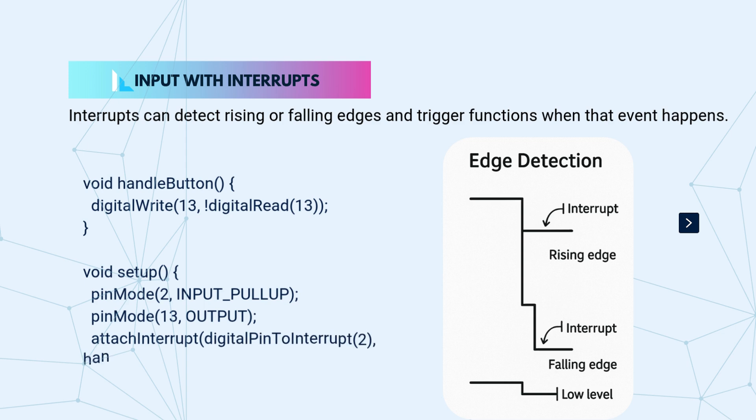Here's what's happening. We start by defining a function called handleButton. This function toggles the LED on pin 13 whenever it's called. In the setup function, we configure pin 2 as an input with a built-in pull-up resistor, and pin 13 as an output for our LED. Then comes the key line: attachInterrupt(digitalPinToInterrupt(2), handleButton, FALLING).